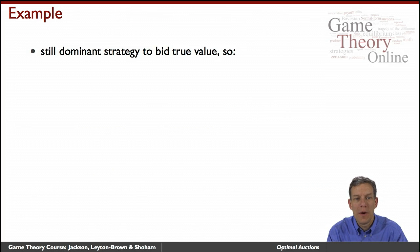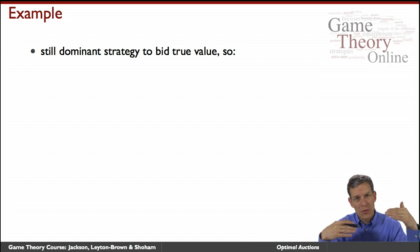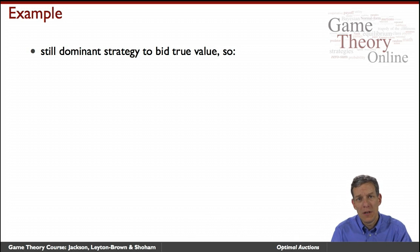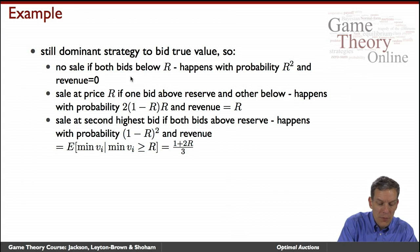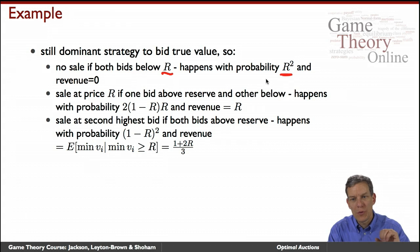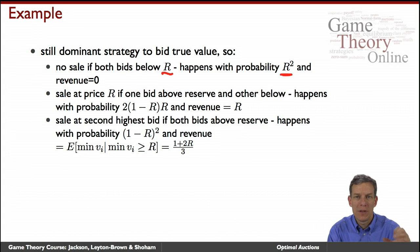It's still a dominant strategy to bid your true value. You can think of the reserve price as just like a third bidder — a fixed bid you happen to know. It's still dominant strategy to bid your true value in a second price auction format. So both bids are below R with probability R squared: since people bid truthfully and values are drawn independently from a uniform distribution, the probability any one is below R is R, so the probability both are below is R squared.